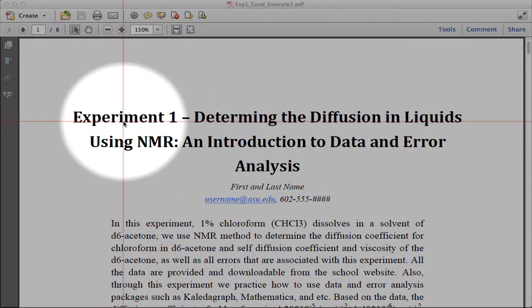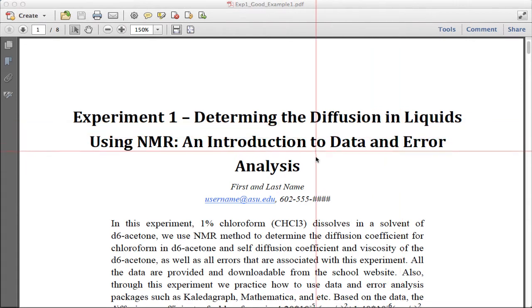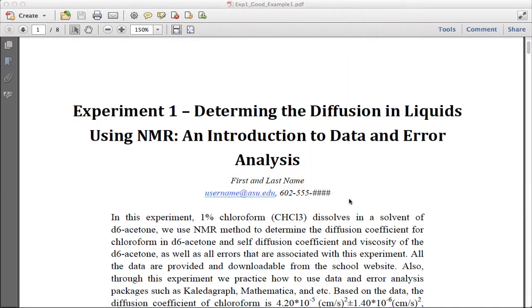So this is a report from several years ago. Experiment number one was a diffusion experiment using NMR, pulse-field gradient spin-echo NMR, used to determine the diffusion coefficient of a liquid. They had a title, they put their name, first name, last name, they had an email address, and even a phone number, basically for contact information.